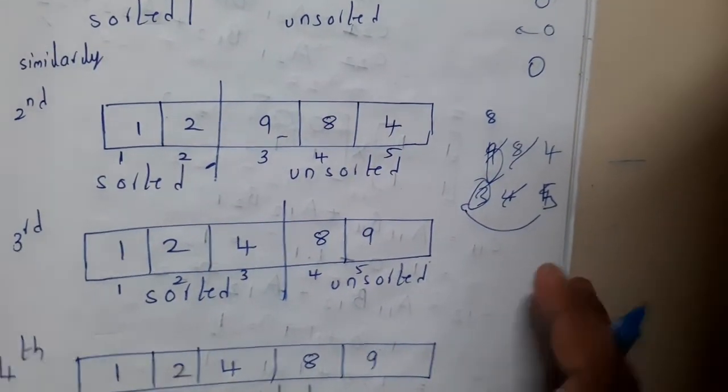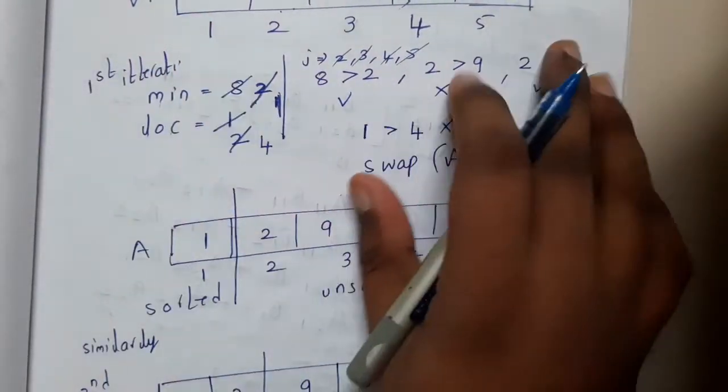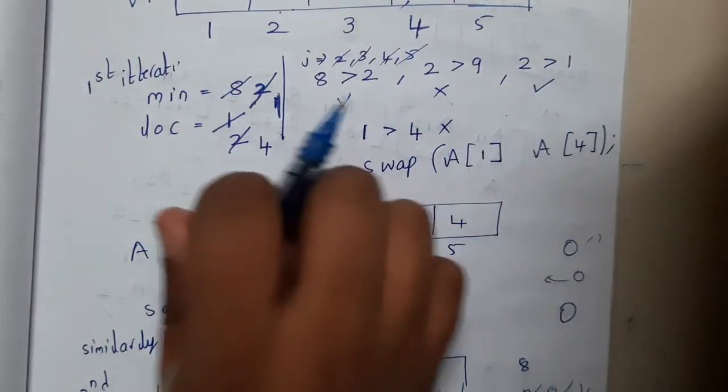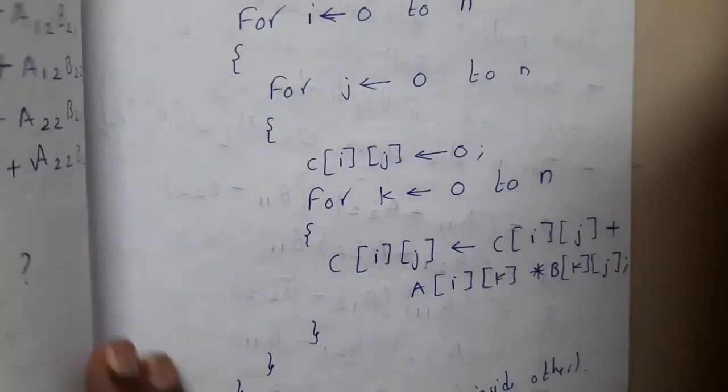I hope everyone got a clear idea. Selection sort is a simple sorting algorithm where you select the smallest element and put it in the first place, second smallest in the second place, third smallest in the third place, and so on. The last element is already in its place.